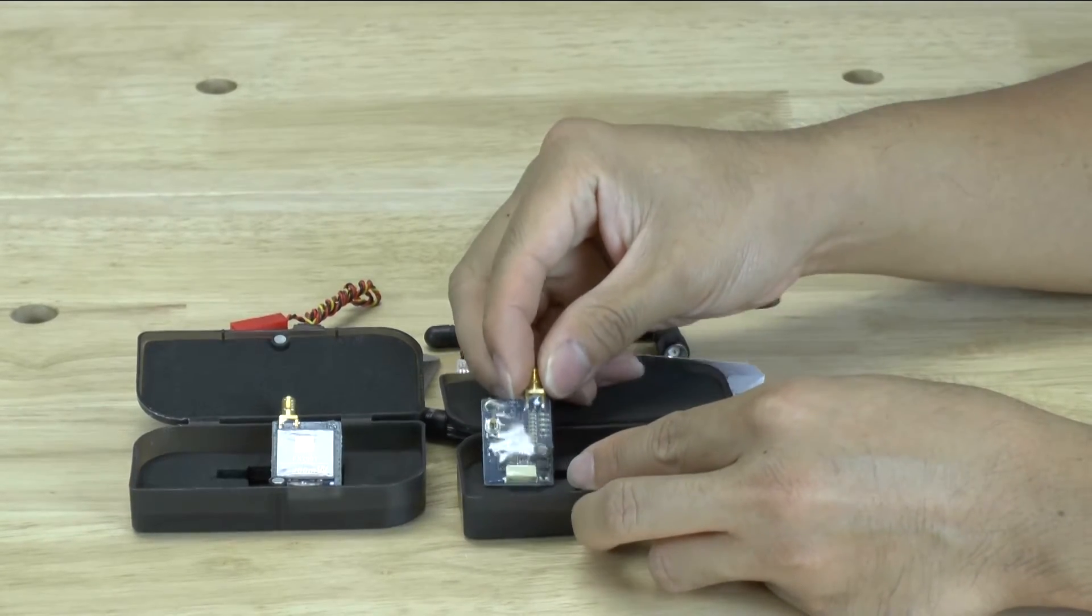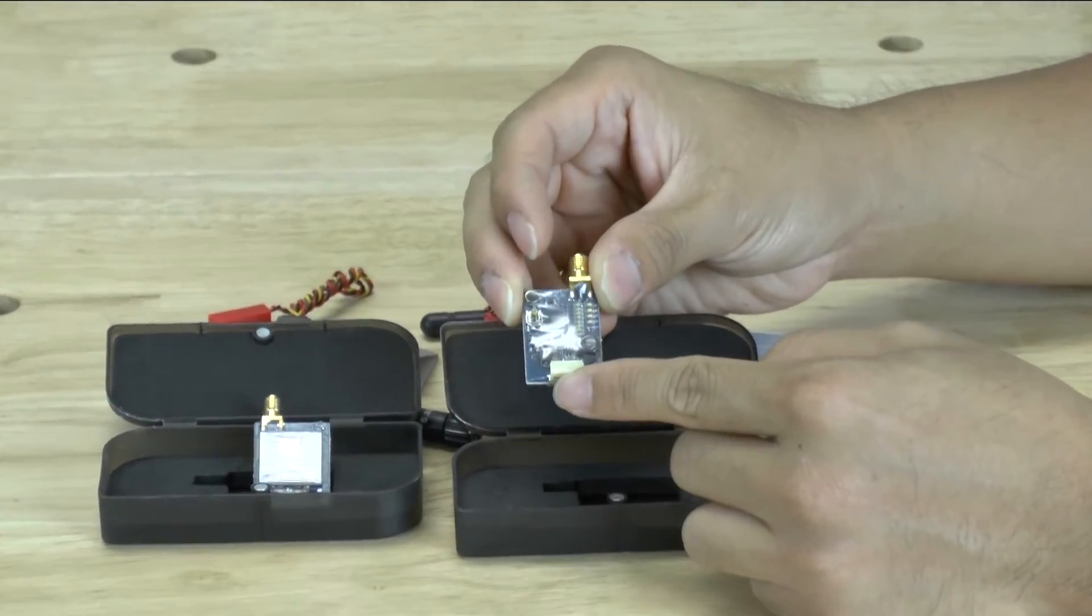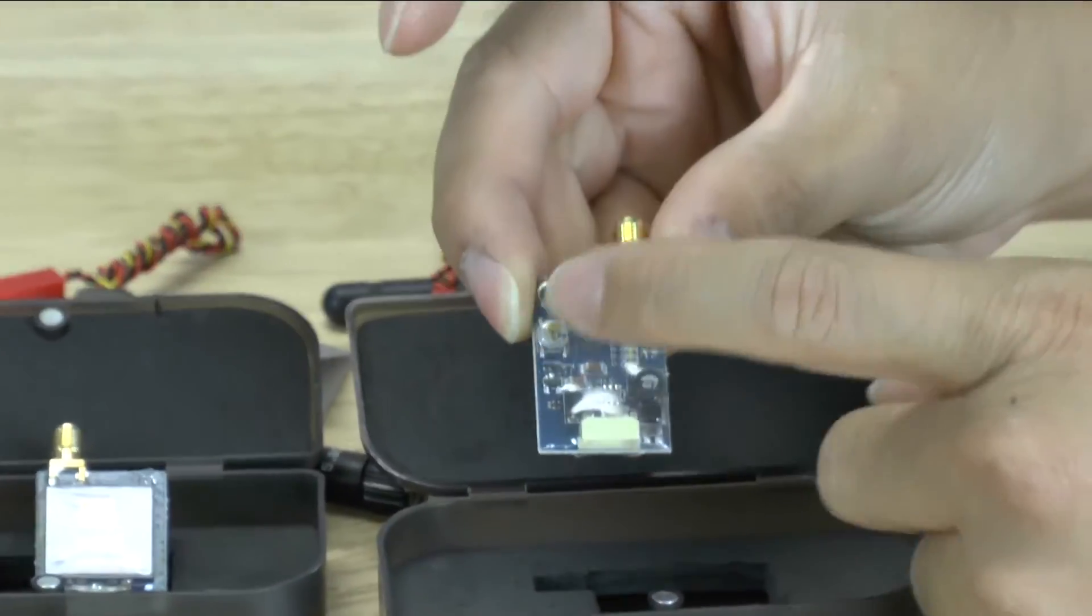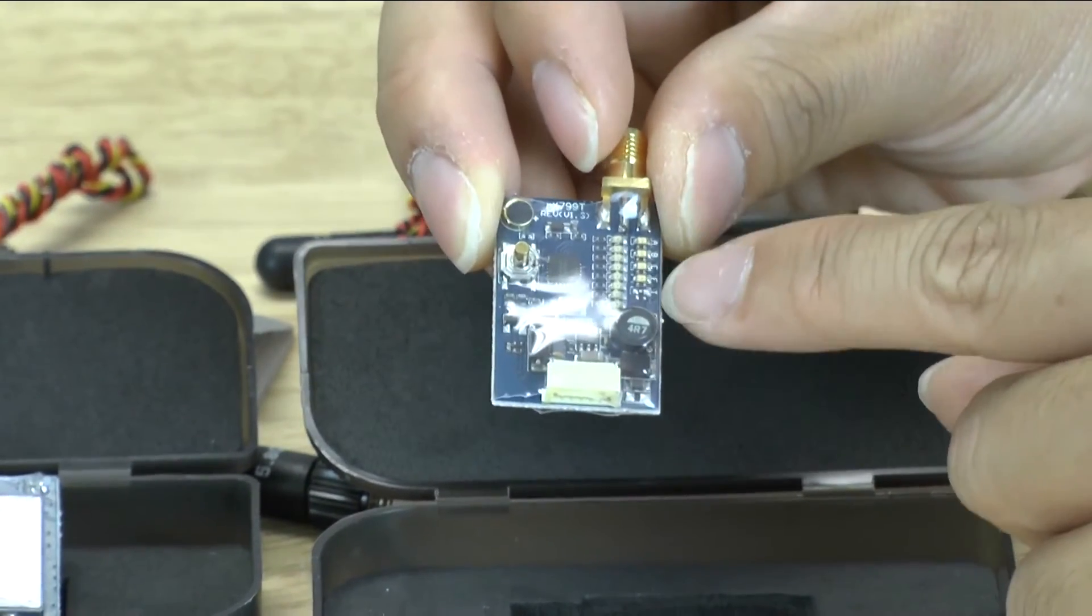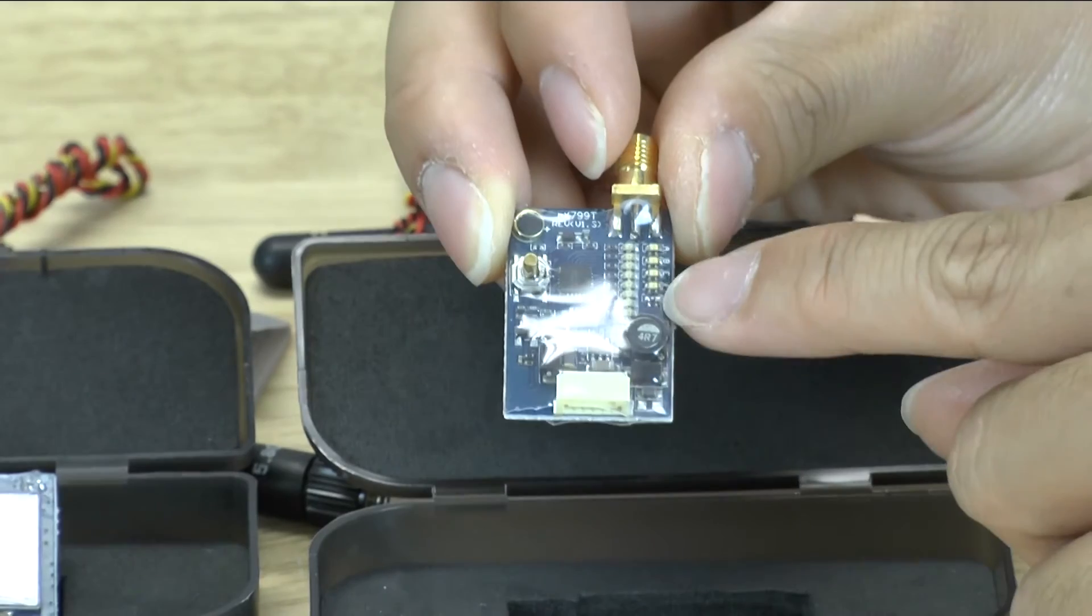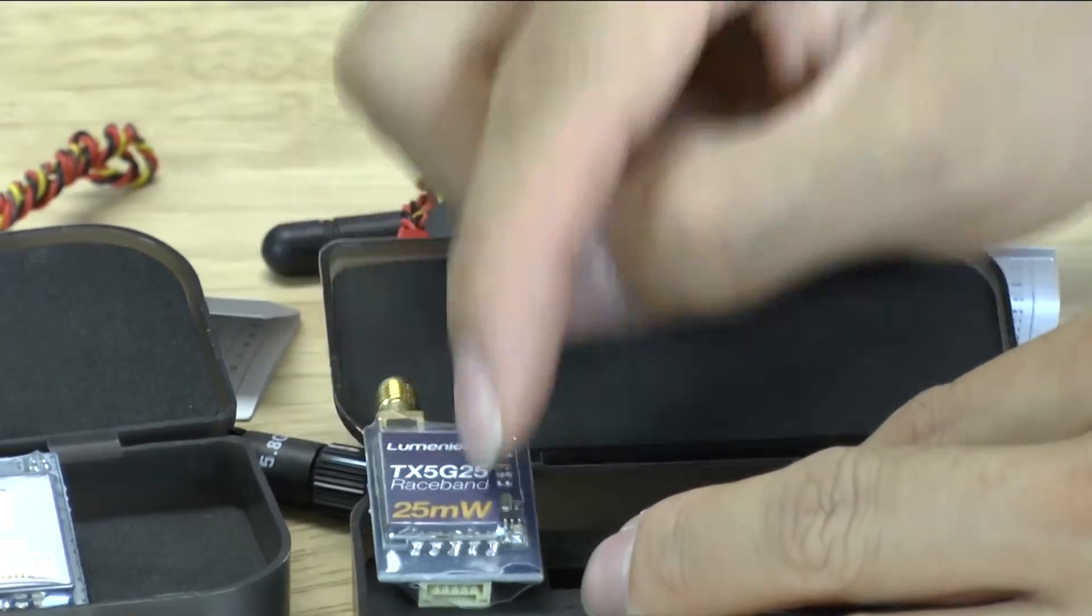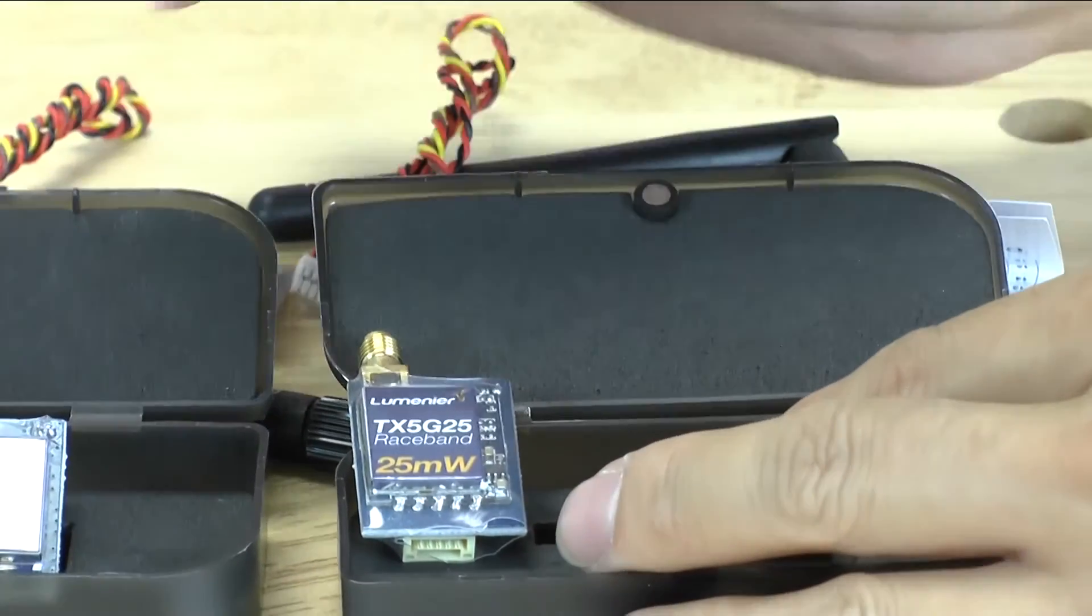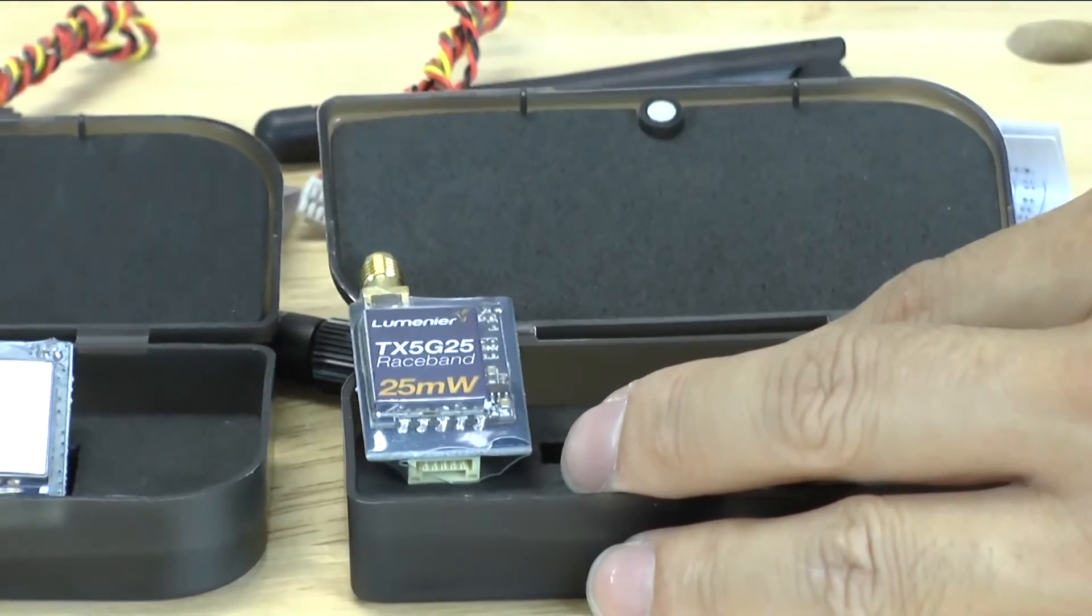Once we come in here, you'll notice that they're very similar in design. The input's down here, antenna connects up here, push button, microphone, and then LEDs. But because this is 32 channel, the last LED doesn't actually light up. And on the other side, this particular one is a 25 milliwatt. Lumineer now offers 25, 200, and 600, just like the FX series.